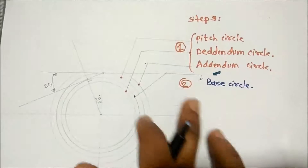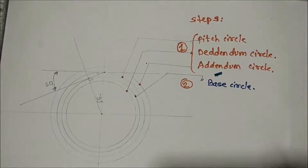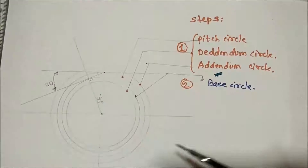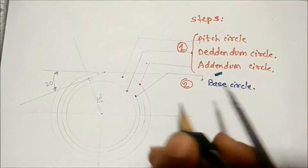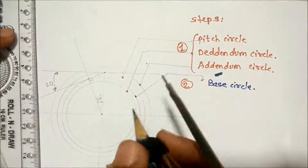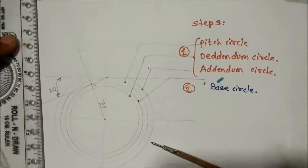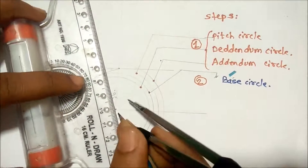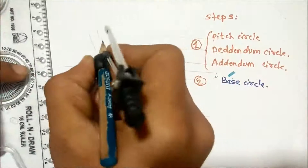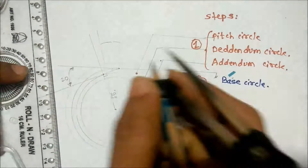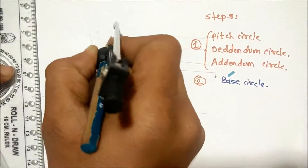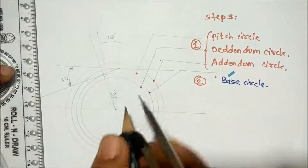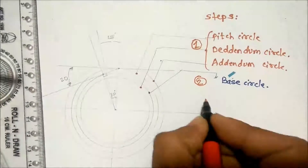The next step: the base circle is divided into equal number of degrees as given by the formula. For example, we divide this circle into equal parts of 18 degrees each.